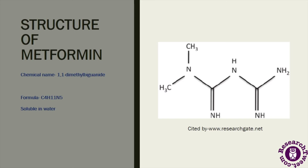Now let's discuss the structure of metformin. The chemical name for metformin is 1,1-dimethyl biguanide, which means its structure is composed of two methyl groups and a biguanide group. The molecular formula of metformin is C4H11N5, which contains nitrogenous groups in its structure, and it is totally soluble in water.